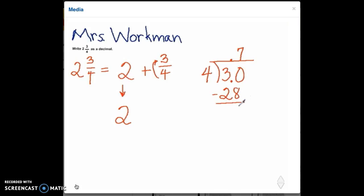Subtracting, we get 2. I'm going to add another 0 so that we can drop it and continue dividing. 20 divided by 4 is 5. 5 times 4 is 20. We get a 0 after subtracting, so we know our division is done.